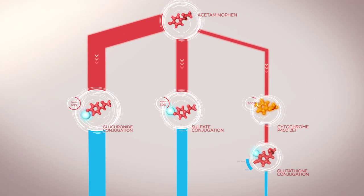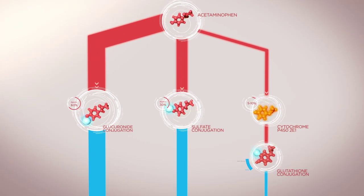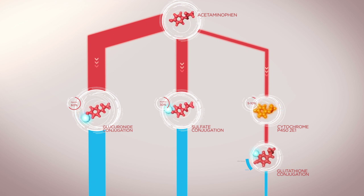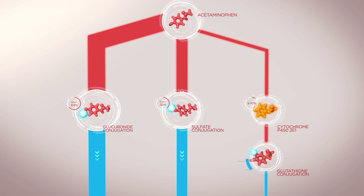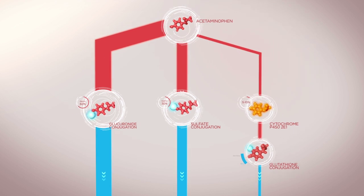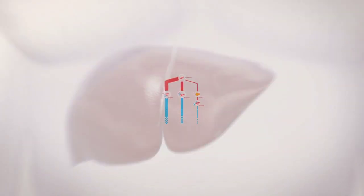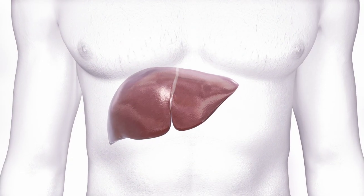In summary, acetaminophen is metabolized in the liver through three distinct pathways, all of which ultimately yield non-toxic metabolites when acetaminophen is taken at recommended doses.